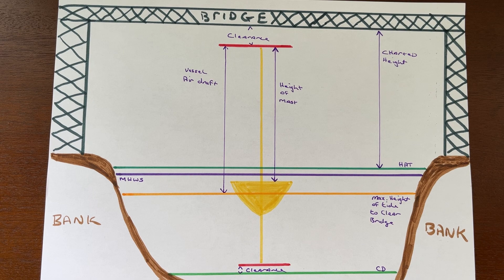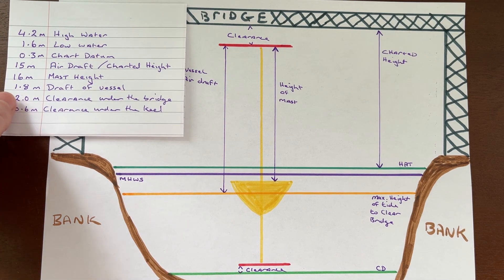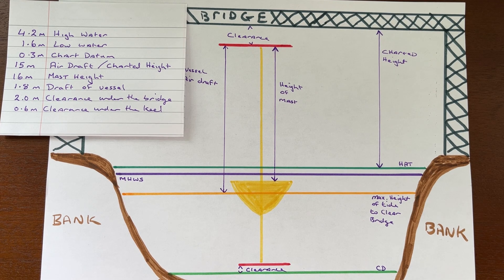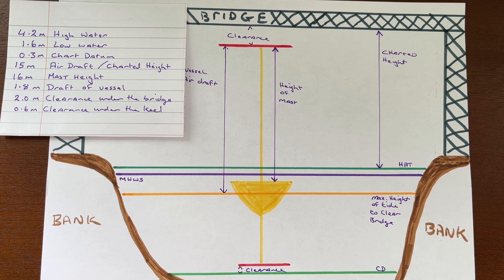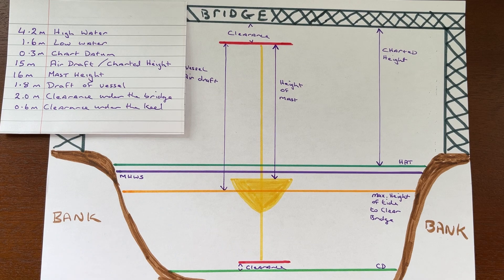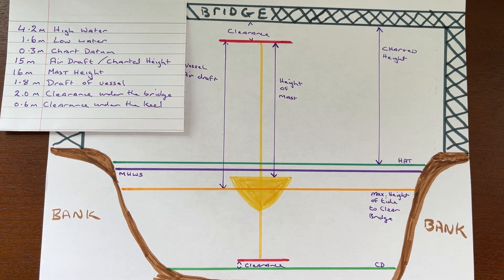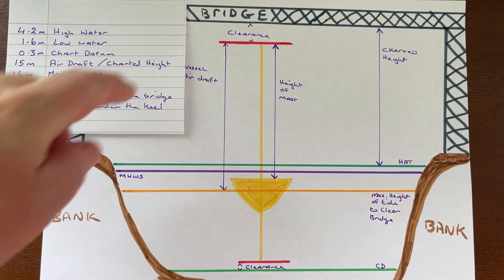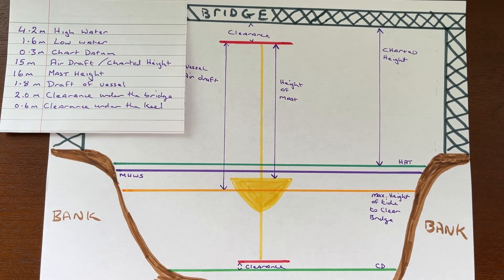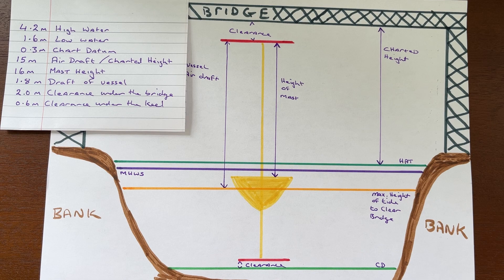We want safe clearance under the keel and above the mast so that the boat is not damaged. Once we collate our numbers together, we have our high water at 4.2 meters and our low water is 1.6 meters. Our chart datum is 0.3 meters. For safety we want a clearance between our keel and the bottom, so we'll calculate a minimum of 0.6 meters of clearance under the keel. We also want a clearance above the top of our mast so that we don't clonk our mast on the bridge understructure.